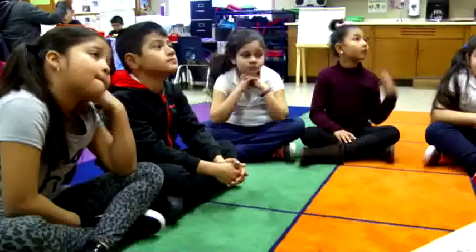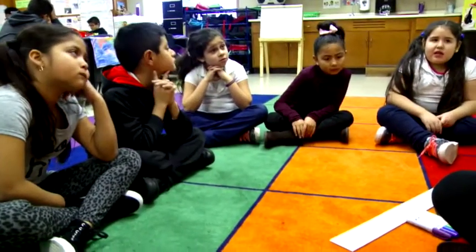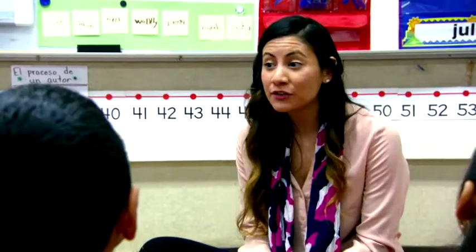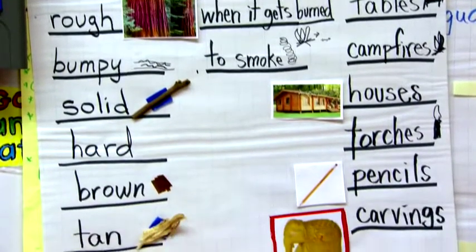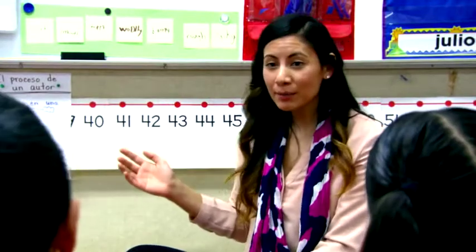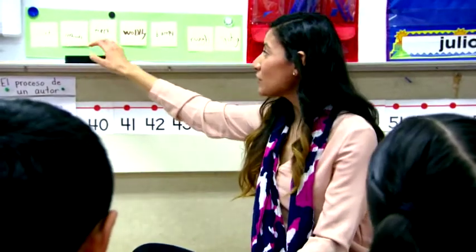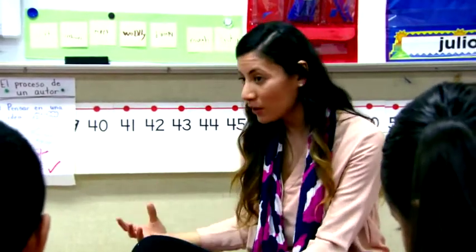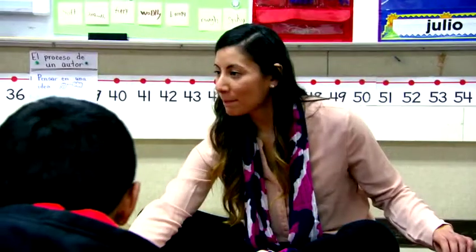The teacher has five students who are emerging and the rest are expanding and bridging. When she excused the expanding and bridging students to work independently with a partner, she kept with her emerging students. She did the same lesson again, but this time providing more teacher scaffolding. Students offer: the wood is bumpy, the wood is smooth, the wood is rough — drawing from a semantic gradient they had studied: soft, smooth, furry, bumpy, rough, and spiky.